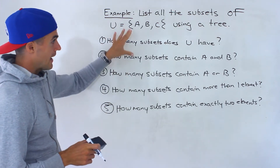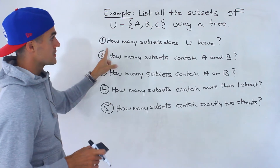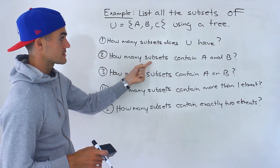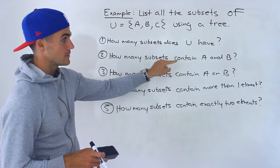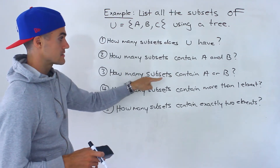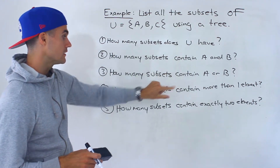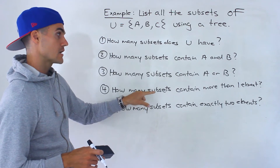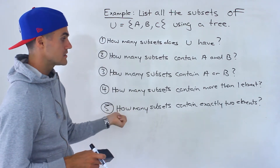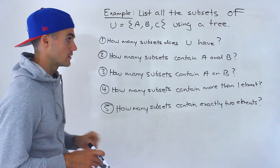And then once we have that, we can use that tree to answer these questions: How many subsets does U have? How many subsets contain the elements A and B? How many subsets contain the elements A or B? How many subsets contain more than one element? And how many subsets contain exactly two elements?